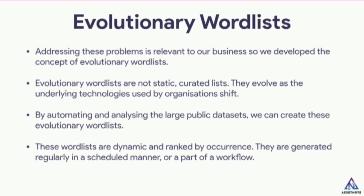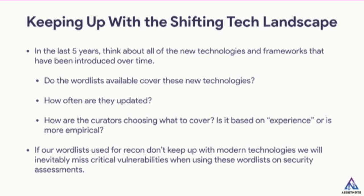And they need to be easily customizable to your needs. That's where we introduced the concept of evolutionary word lists. Evolutionary word lists are not static, curated lists — they evolve as the underlying technologies used by organizations shift. The idea is that by automating and analyzing large public data sets, we can create these evolutionary word lists. They're dynamic, they're ranked by occurrence, and they're generated regularly in a scheduled manner as part of an automated workflow.